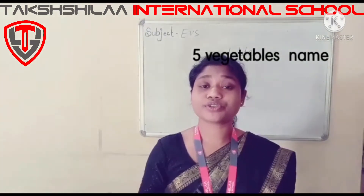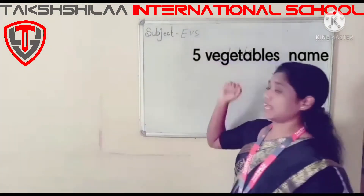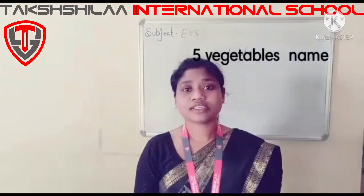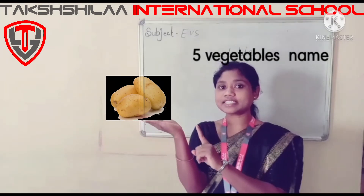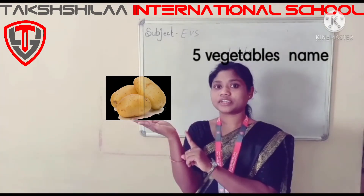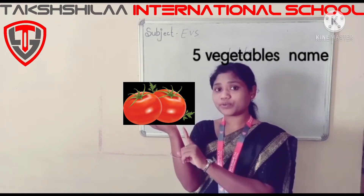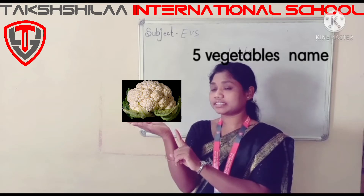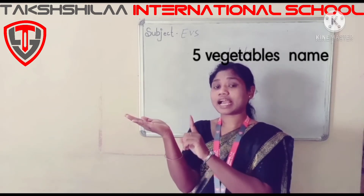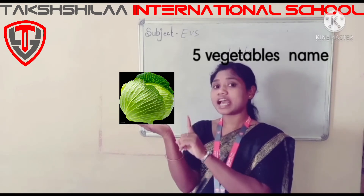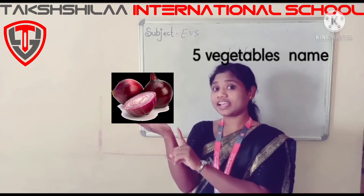So dear students, today we are going to learn vegetables names. Let's start. Potato — this is potato. Tomato — this is tomato. Cauliflower — this is cauliflower. Cabbage — this is cabbage. Onion — this is an onion.